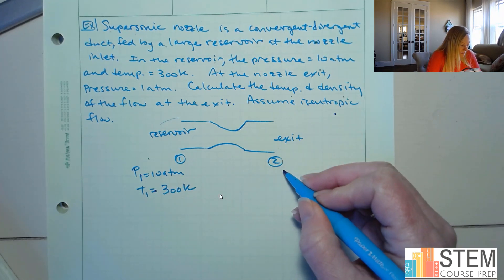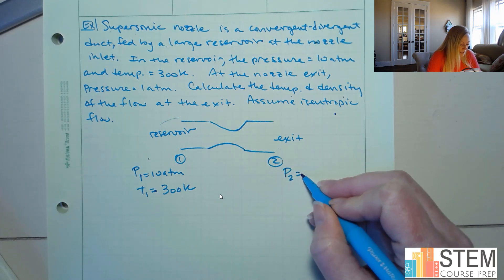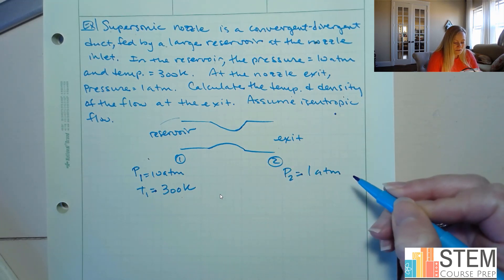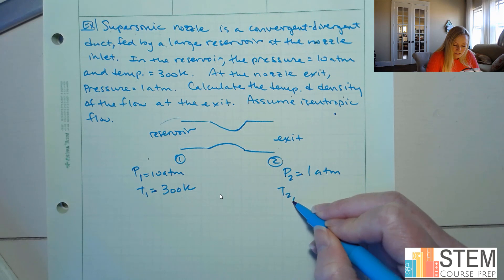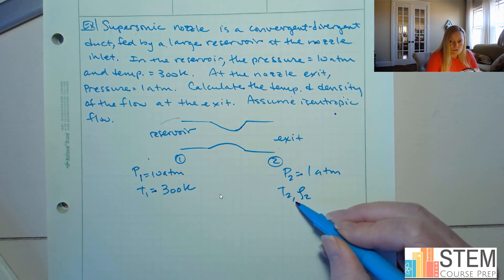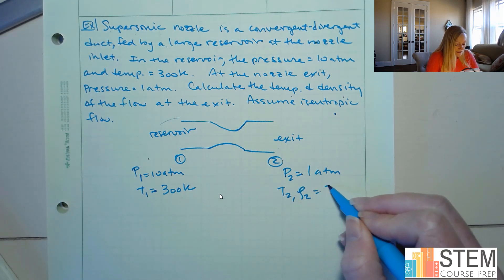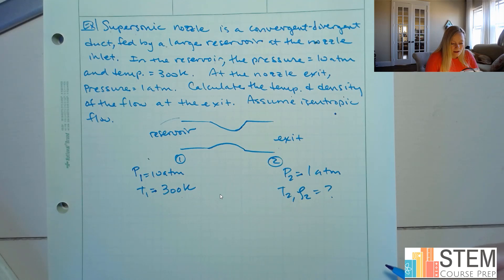Now over here, I've got a pressure of 1 atmosphere. Now I want to find the temperature and the density. So T and rho is what we're looking for. And remember, we're assuming we have air here, so gamma is going to be 1.4 throughout the whole thing. Okay, so that's what we're given.